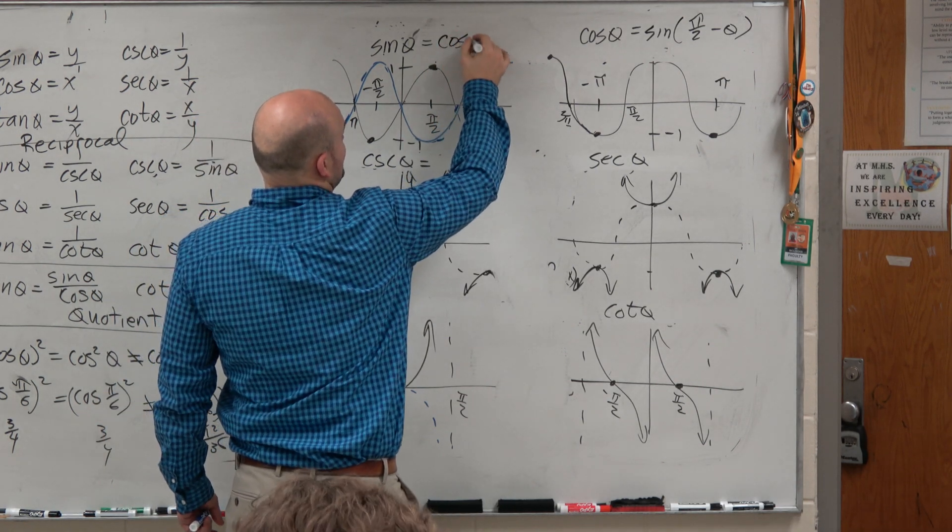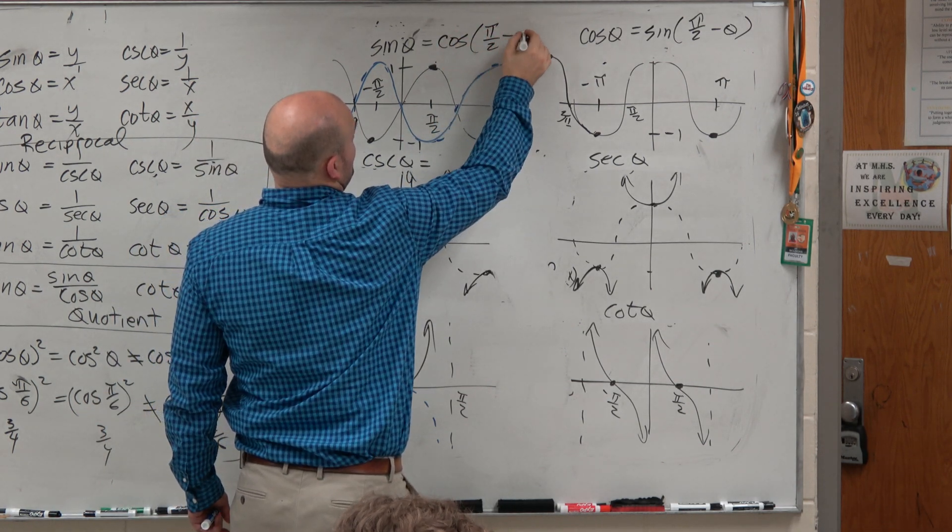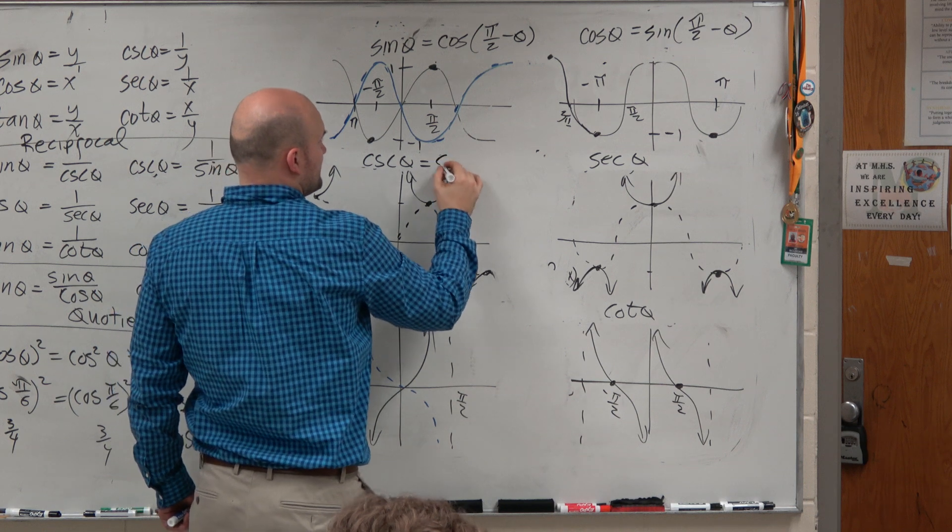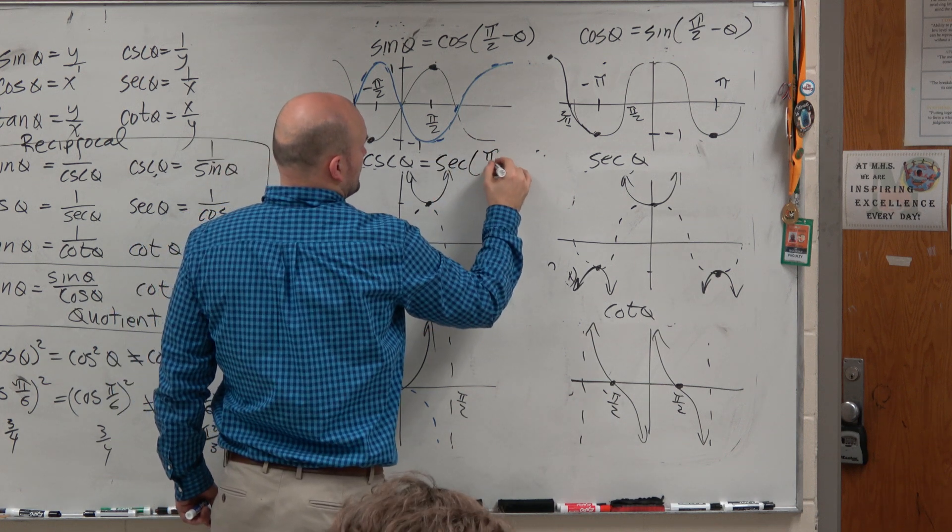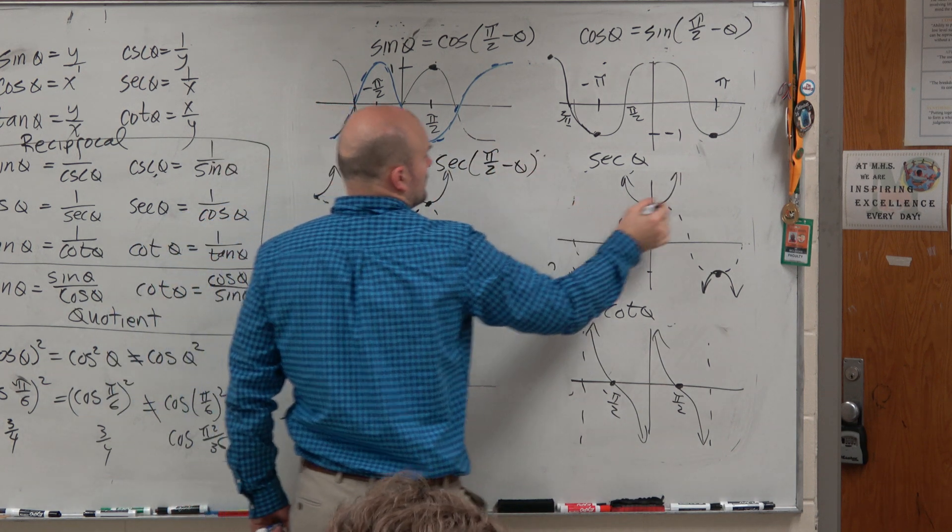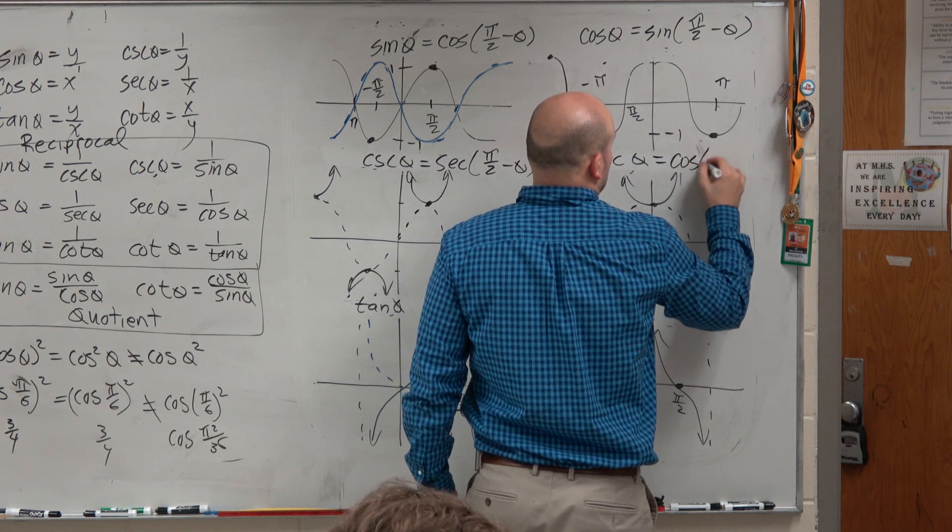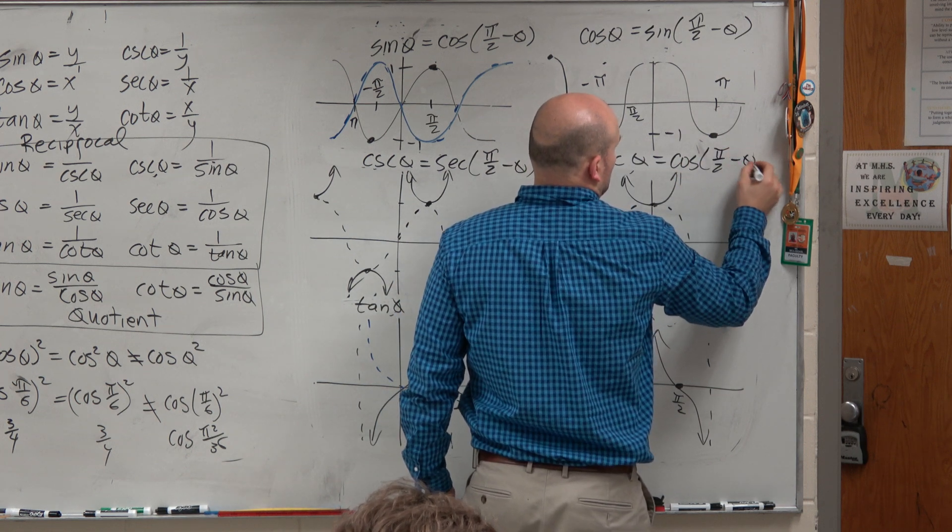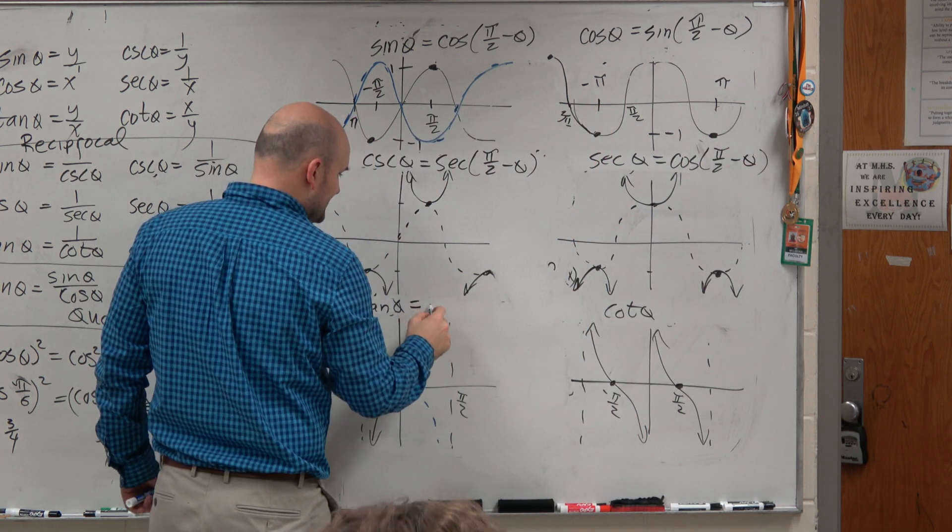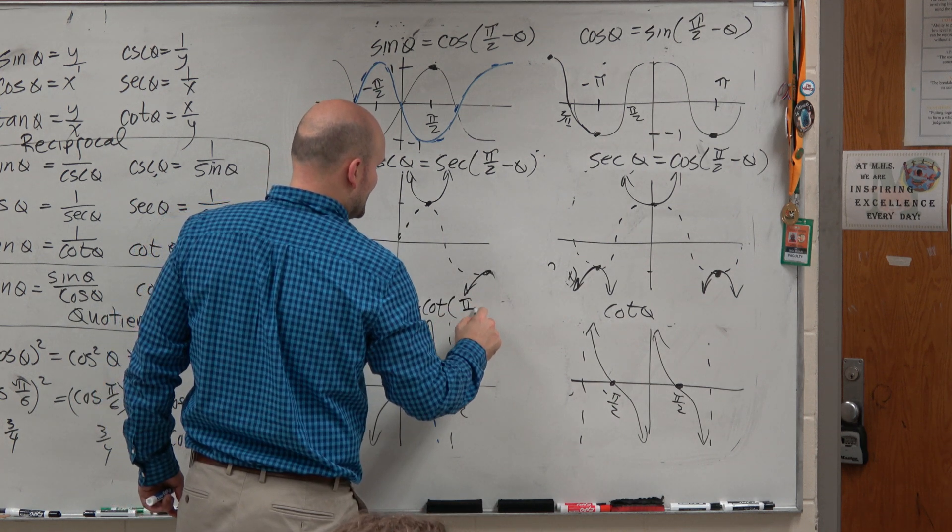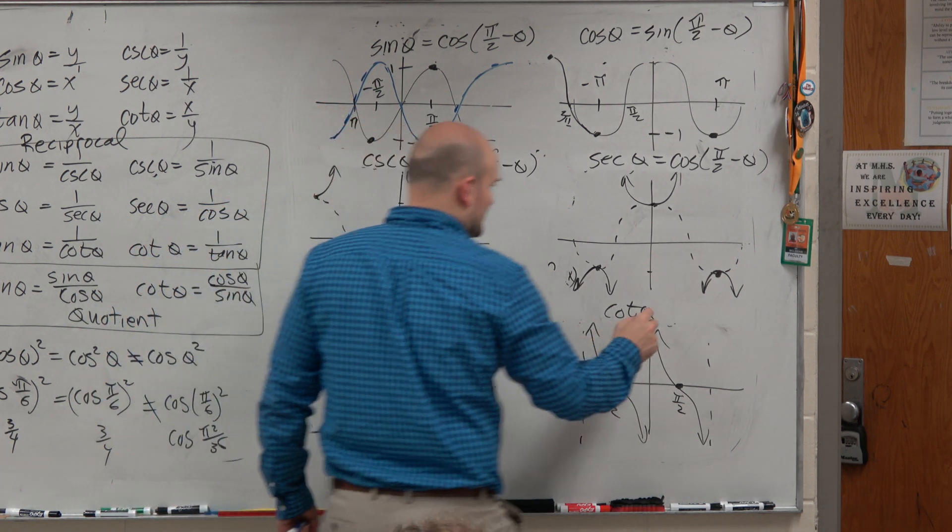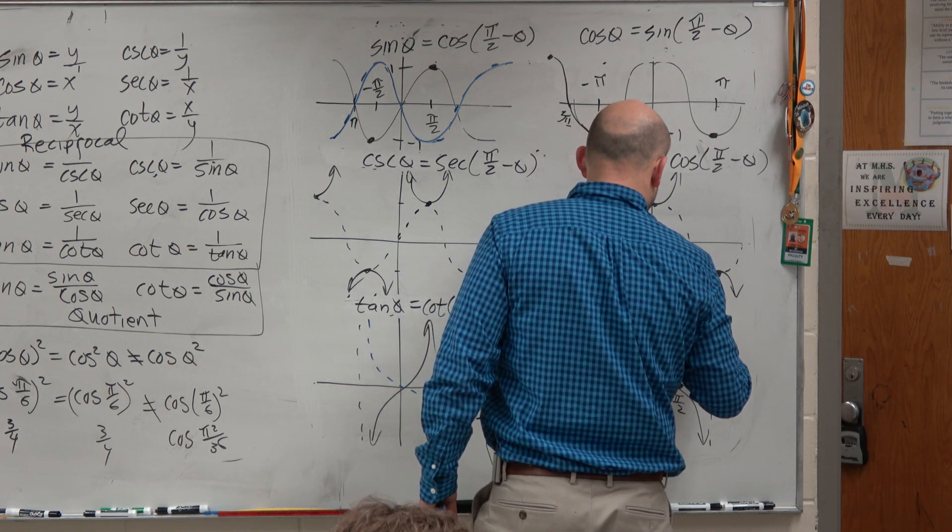And then if you guys look at this, which I'll show you guys on the counter, this works for all of them. And these are called our co-function identities.